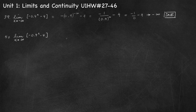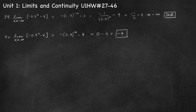Number 40, limit as x approaches positive infinity of the same function. Negative 0.4 to the power infinity: since 0.4 is between 0 and 1, 0.4 to the power infinity approaches 0. So substitution gives 0 minus 4, which is negative 4. That is a finite value, so the limit exists and equals negative 4.